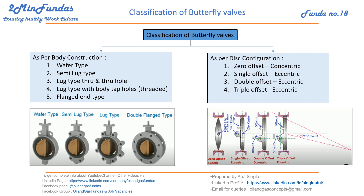There are two categories to classify butterfly valves. First is as per body construction, and second is as per disc configuration. Based on body construction, we have five types: wafer type, semi-lug, lug type, through and through bolts lug type with body tap holes threaded ones, and the flanged end type. Based on disc configuration, we have zero offset which we call concentric type, and under eccentric we have three types: single offset, double offset, and triple offset.